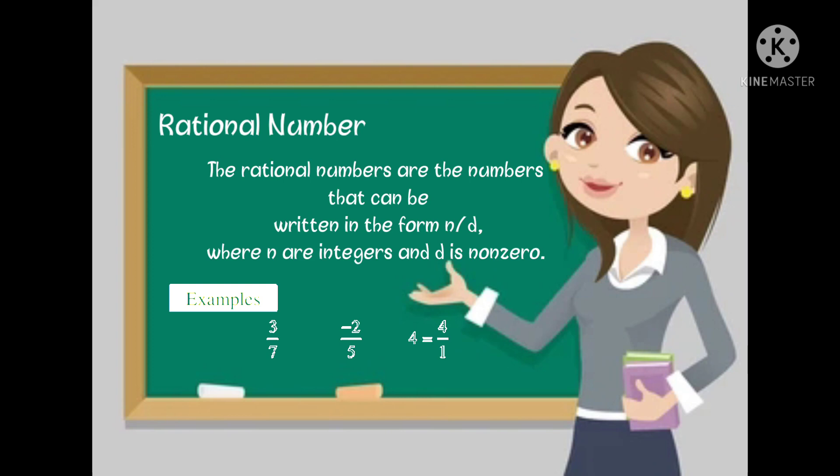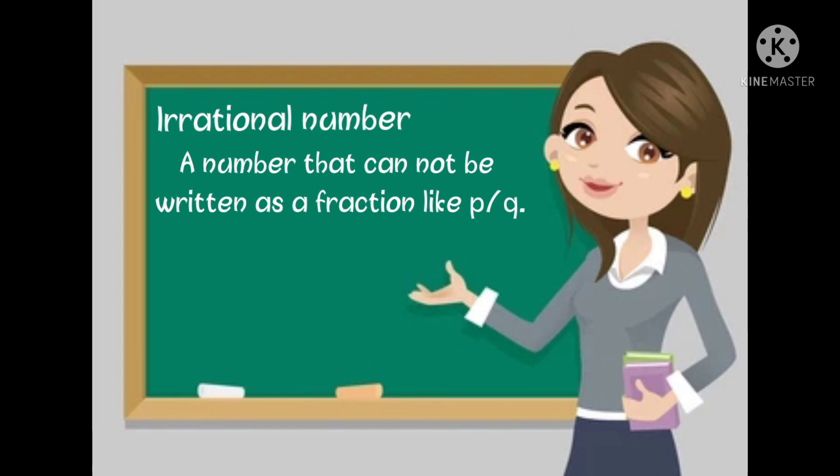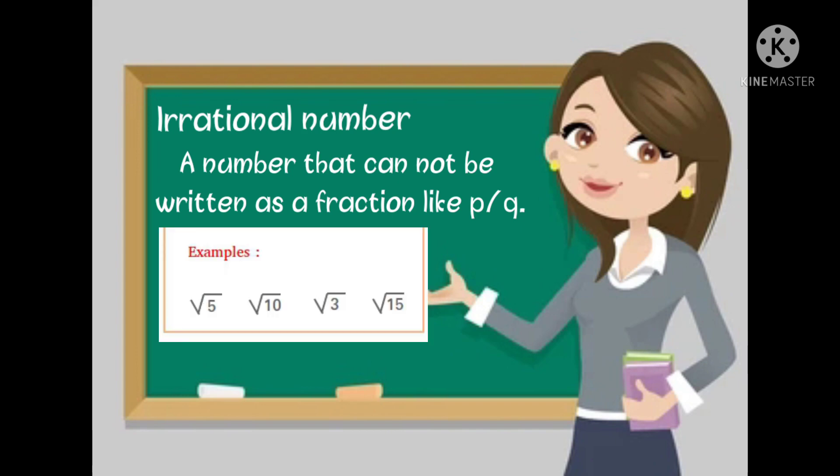Irrational number: A number that cannot be written as a fraction like p/q. Let's see the examples: √5, √10, √3, and √15. These are the examples of irrational numbers.